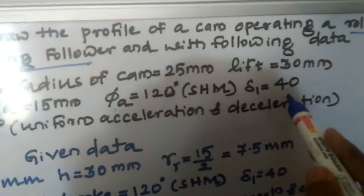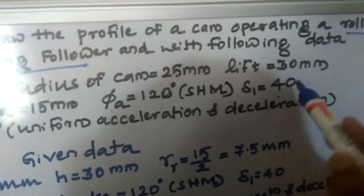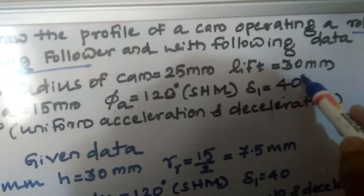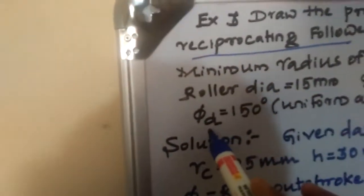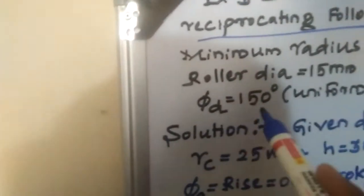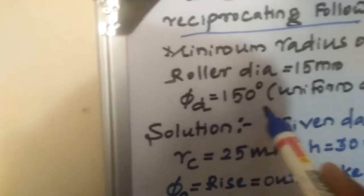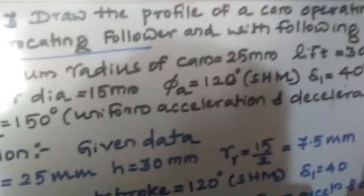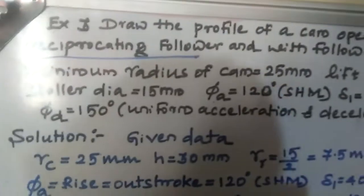Dwell period is 40 degrees. Then descending period is 150 degrees with uniform acceleration and deceleration. In that case, you have to draw the profile of the cam.